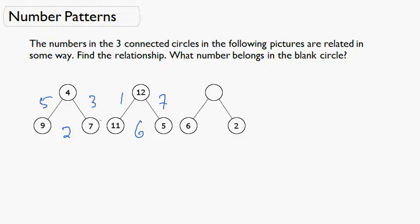So basically the pattern here is the top number is twice the difference between the bottom numbers. So 4 is twice 9 minus 7, and 12 is twice 11 minus 5. So that means this number here is twice 6 minus 2 which is 4. So the answer is 8.